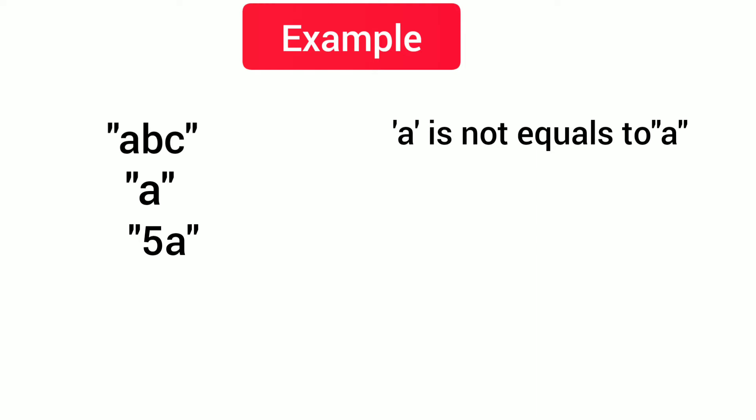The digit 5 enclosed within double quotation marks, i.e., "5", is also a string constant. Even a name like "Rahul" enclosed in double quotation marks is a string constant.